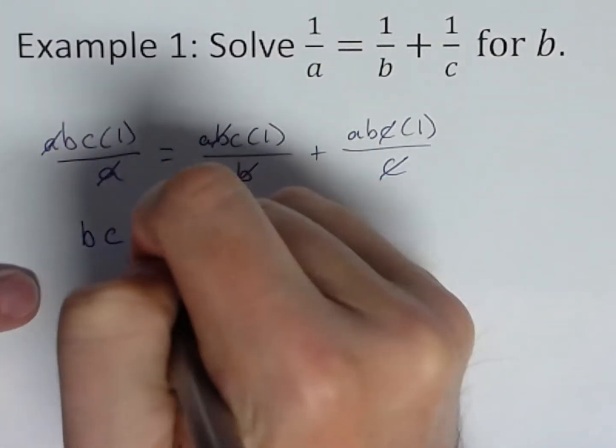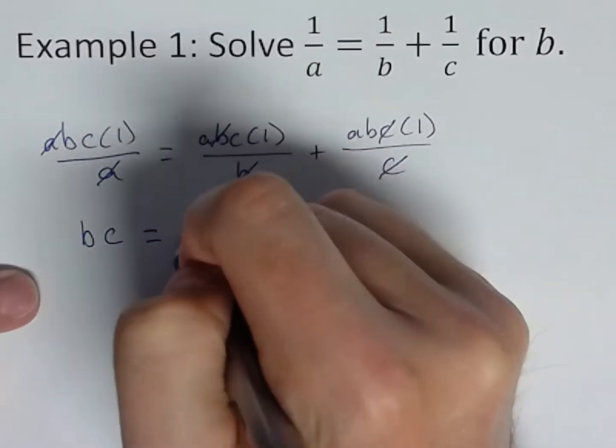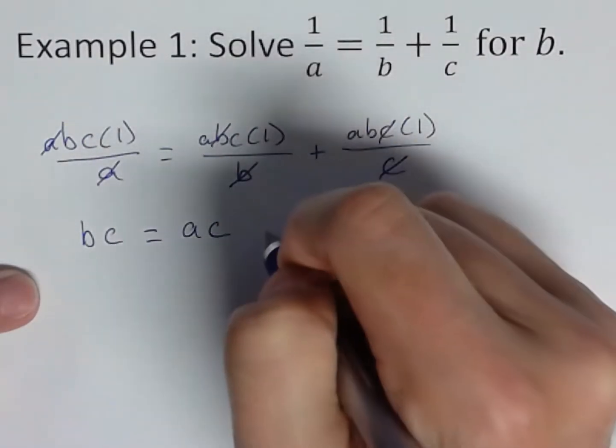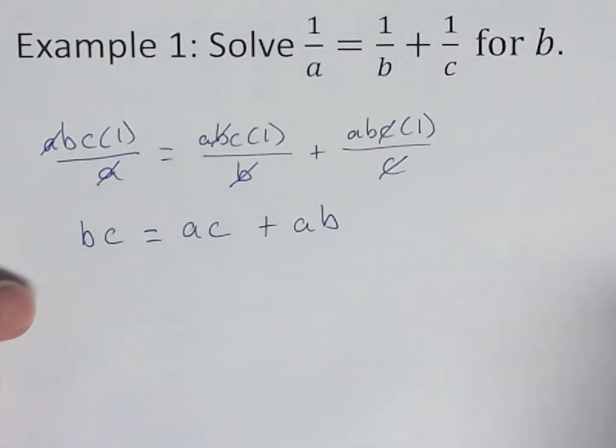So we now have B, C equals A, C plus A, B. Now look how much nicer already that looks. You don't have fractions, all those things. We're not done, but look how nice that looks compared to where we started.